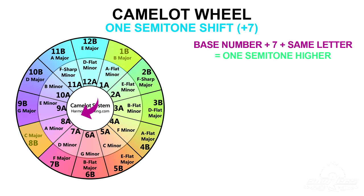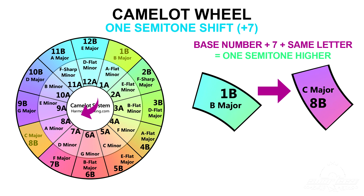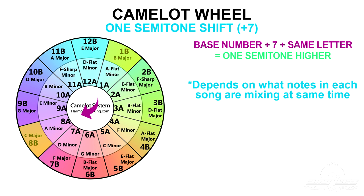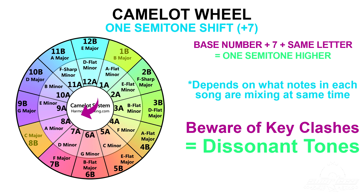Another example would be going from 1B B major to 8B C major — so 1 plus 7 equals 8, and you keep it in the outer ring with the letter B key codes to stay in the major key, so 1B becomes 8B. Keep in mind this is completely dependent on the particular songs you're using and the portions you're mixing together, because you risk the melodies clashing if too many different notes in each of the keys are playing simultaneously — this creates what's called dissonant tones. Your best use of this one-semitone shift is probably for a special effect rather than a long blend.